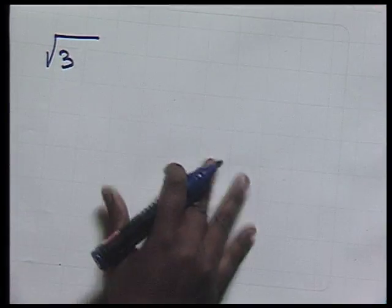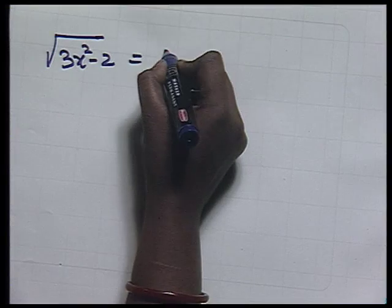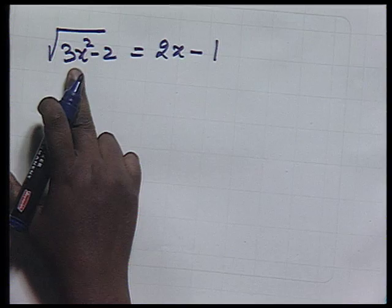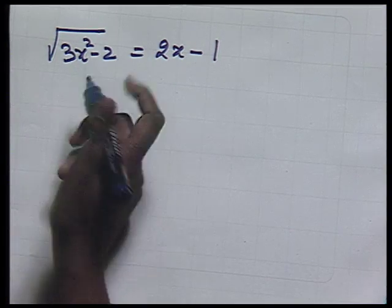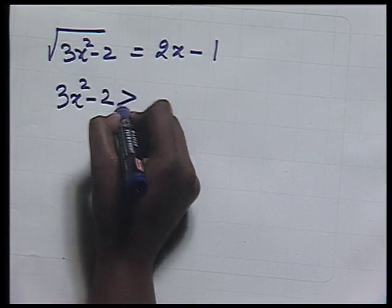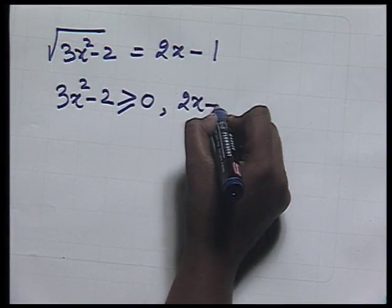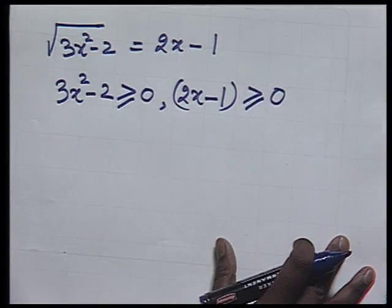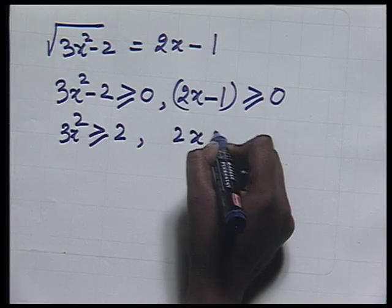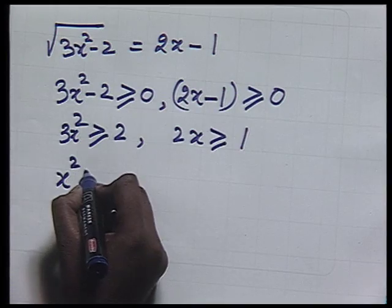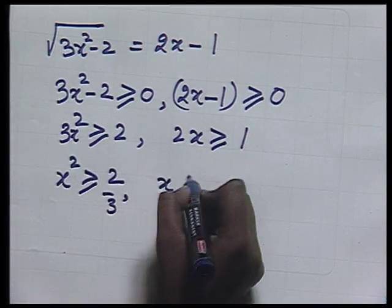Consider the equation √(3x² - 2) = 2x - 1. This equation involves a radical sign. It will have roots if 3x² - 2 is non-negative and also the right-hand side 2x - 1 is non-negative — that is, if 3x² ≥ 2 and 2x ≥ 1, meaning x ≥ 1/2. We can find solutions of some equations not in quadratic form by reducing them to quadratic form.